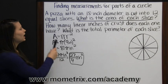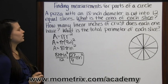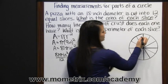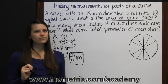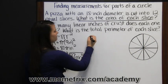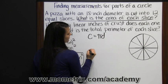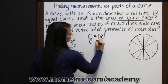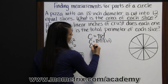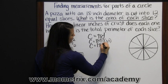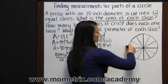The next question says, how many linear inches of crust does each one have? So when they're talking about the crust, that's part of the circumference of the circle. How much of the circumference? The circumference of a circle is pi times the diameter. So the circumference of the circle is pi times 18 inches, since that's our diameter. Which means our circumference is 18 pi inches. That's the distance all the way around the circle.